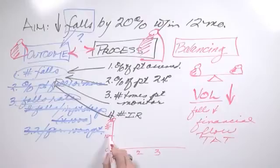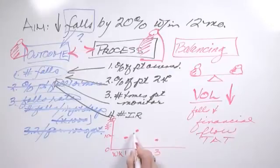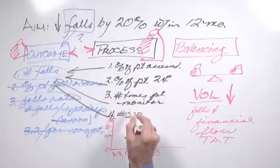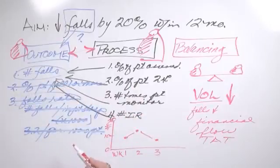Week one, we saw eight falls. Week two, we saw 12 falls. Week three, we saw five falls. We would want to make sure that we're linking some way to analyze our data through a run or control chart so that we can track each of our measures that are processed and each that are outcomes.